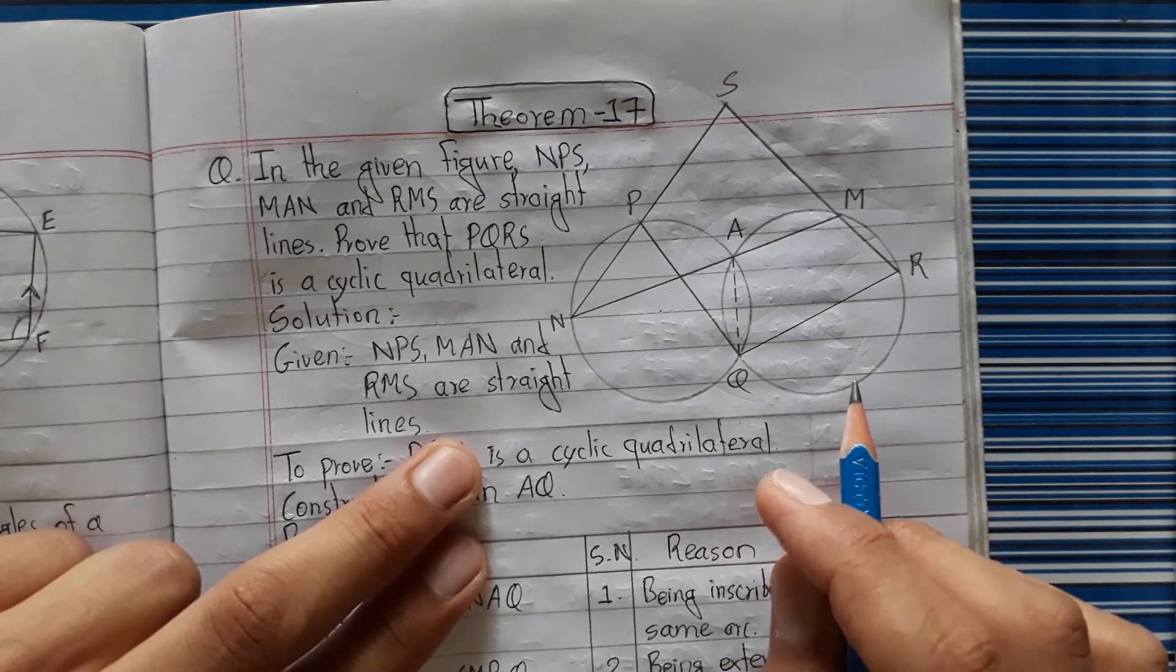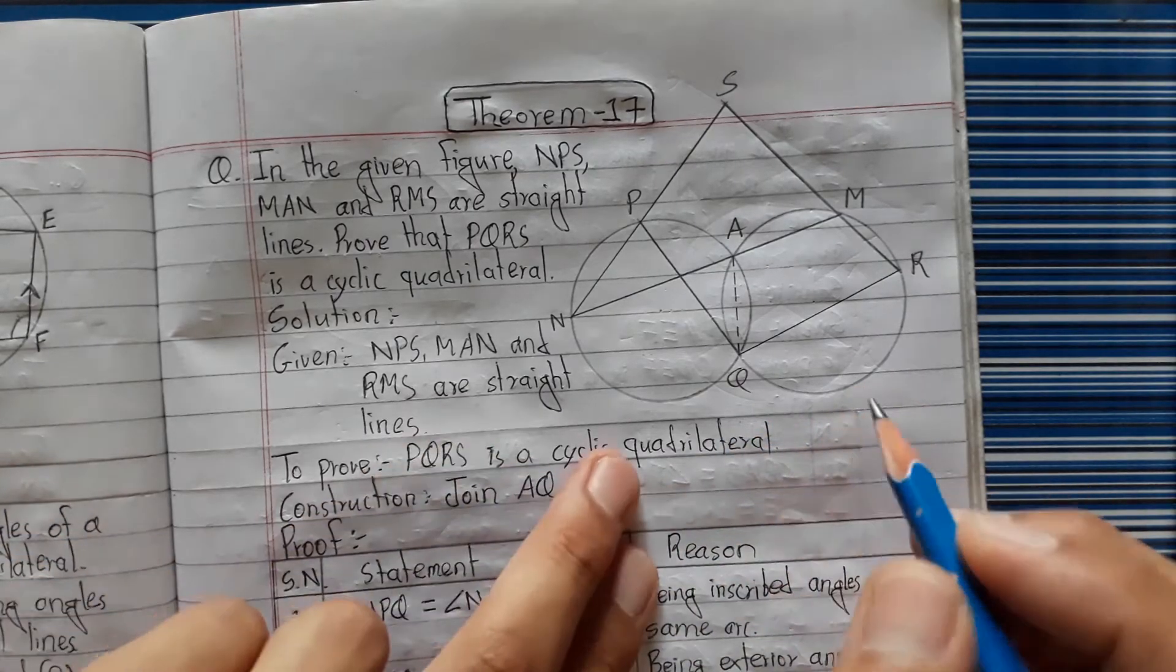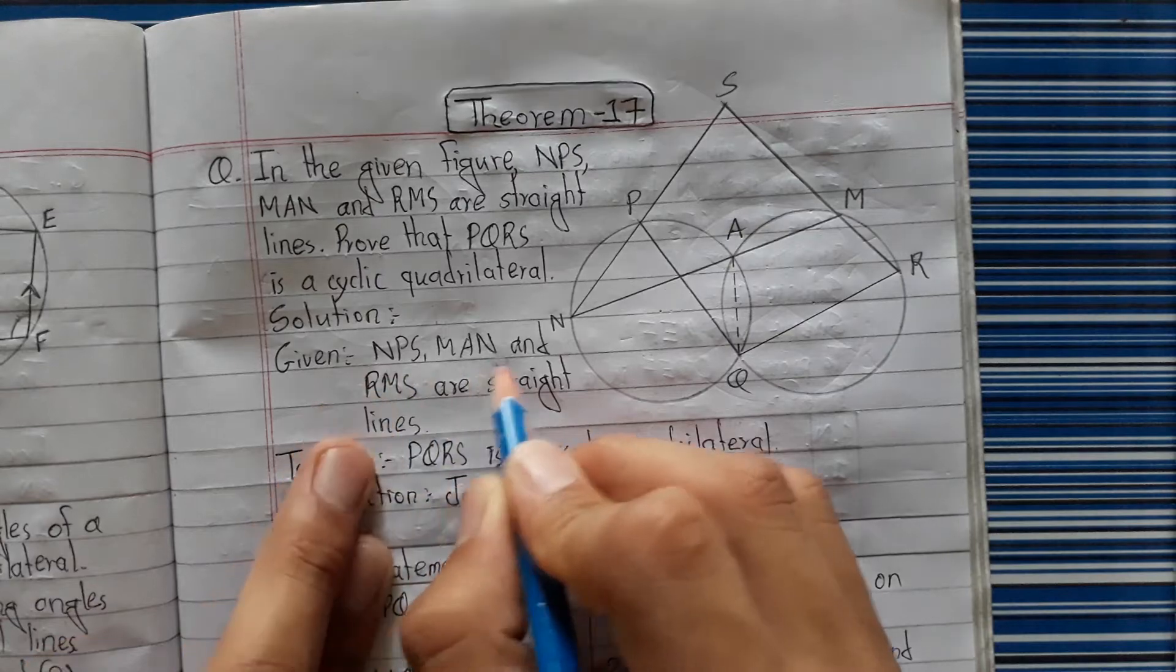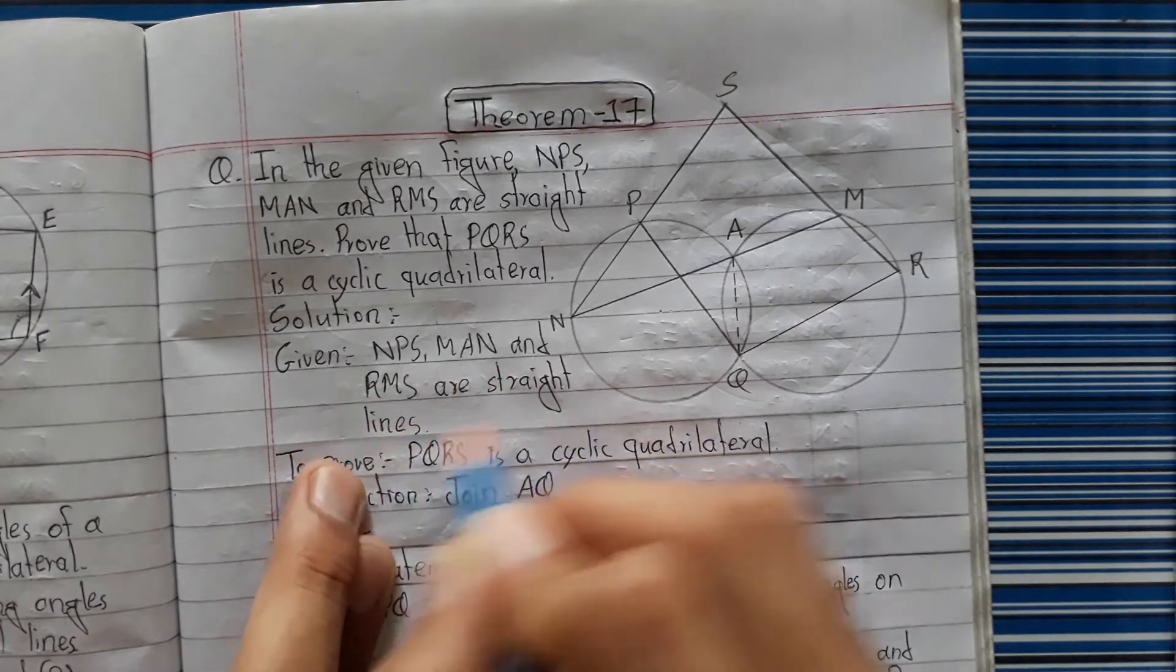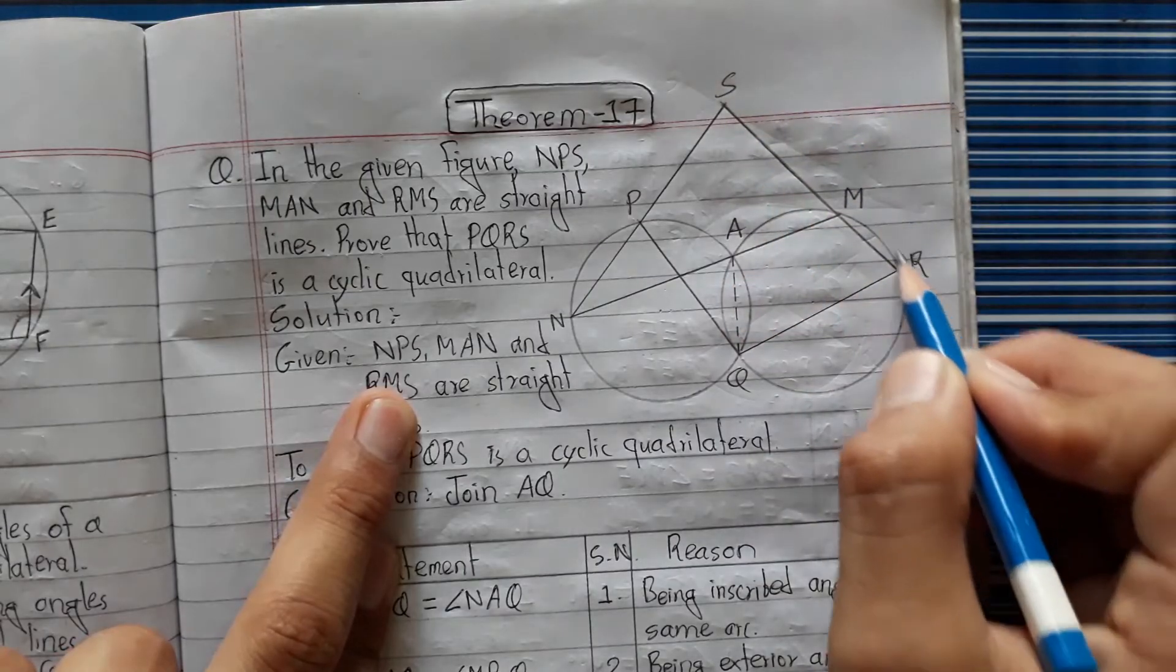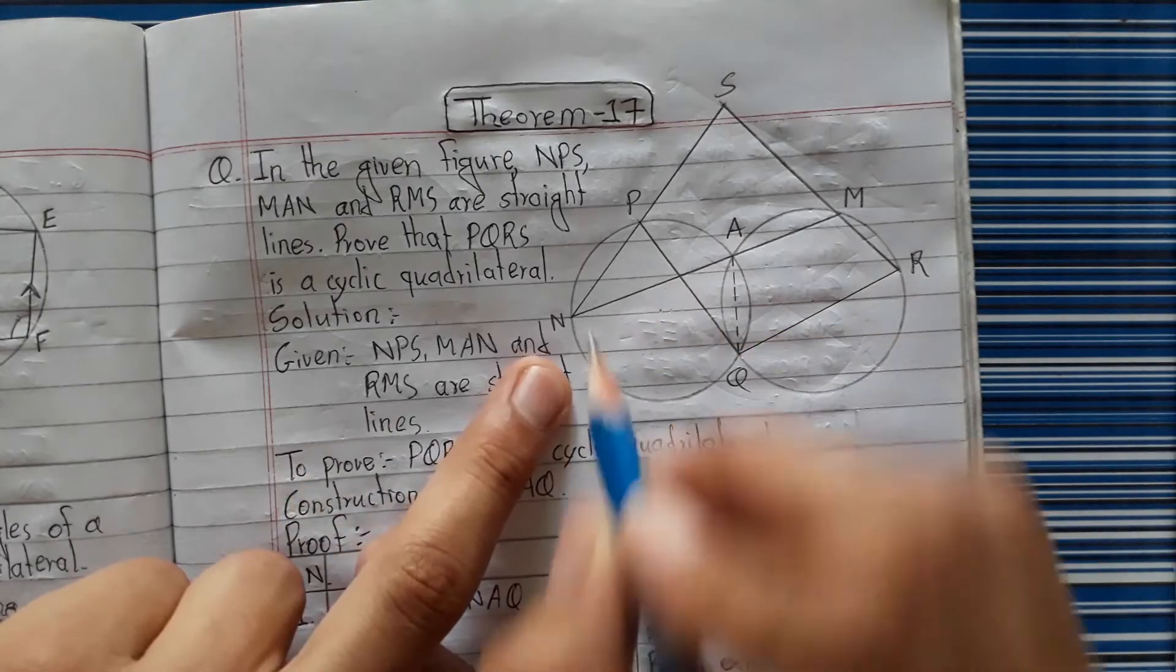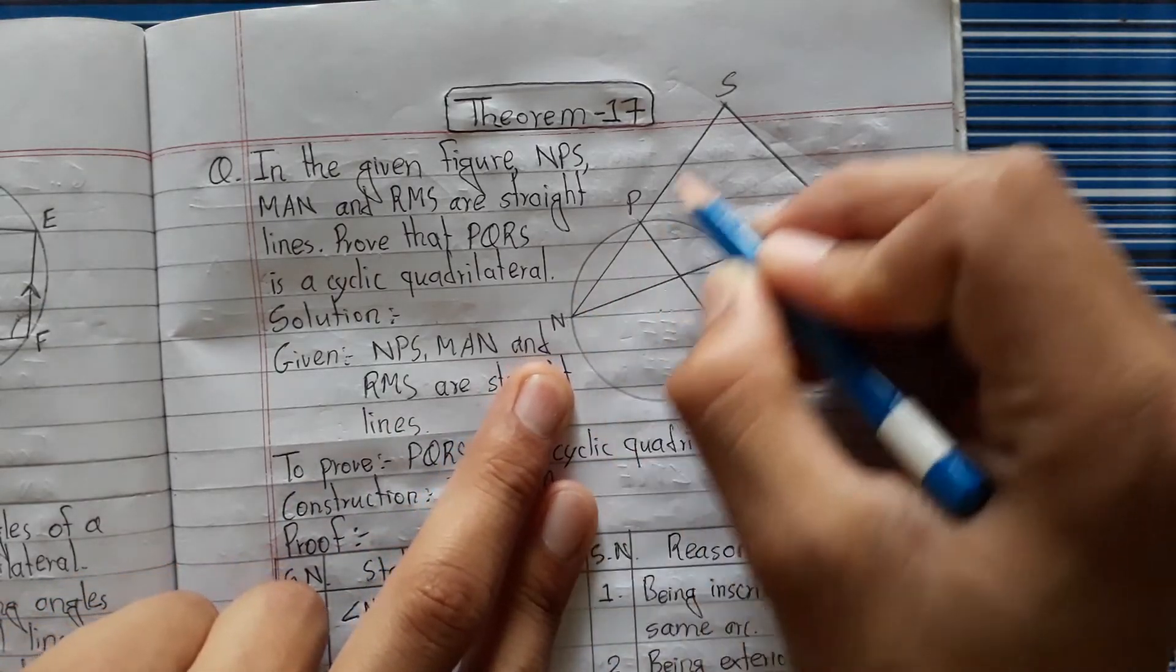Looking at the figure, we need to prove the theorem. So well, given that PSM and RMS are straight lines, these lines are straight lines.